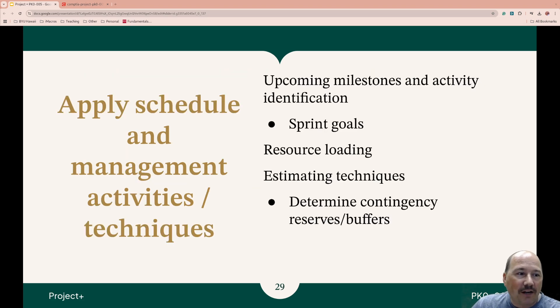Project Plus, Applying Scheduling Management Activities and Techniques. When we're thinking about upcoming milestones and the activities that we're going to identify, they'll be part of a sprint goal. That's in Agile Project Management where we think of these small timeframes where we focus on specific deliverables and try and get them out quickly. We also need to be thinking about our resource load. So we are assigning those tasks, project tasks, over time to specific team members, resources. Each team member or resource, we want to make sure they're not over allocated, so they have too much to do, or underutilized, they don't have enough to do.